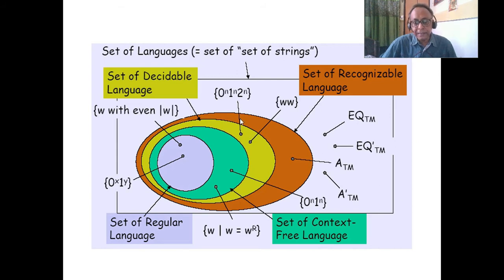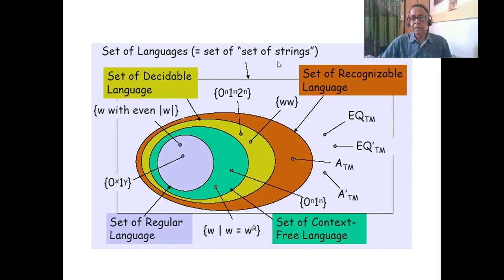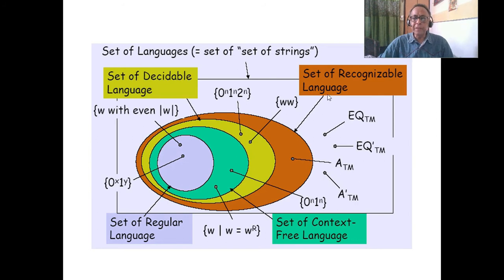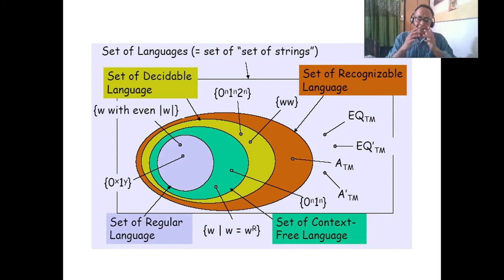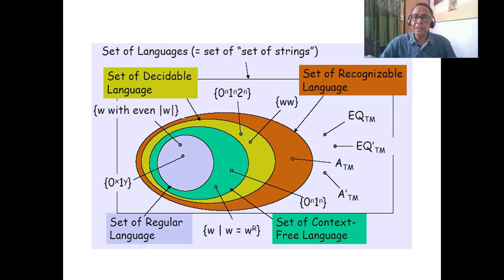Then we have two parts: one is Turing machine decidable — decidable is a closer set — and Turing recognizable, which is the outer set. It is recognizable — that is a very hard term. Decidable is a softer, more compliant term. Decidable means the language and its complement are also decidable, whereas recognizable means the language is recognizable but its complement is not recognizable. So it is a further set.